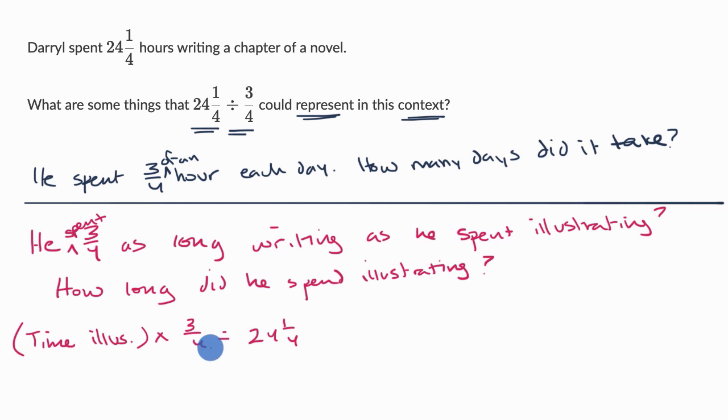So if something times 3/4 is equal to 24 and 1/4, then 24 and 1/4 divided by 3/4 should be equal to time illustrating. So these are the two contexts that I can think of that might make sense, but you might be able to think of others.